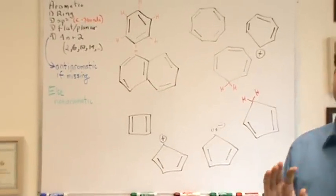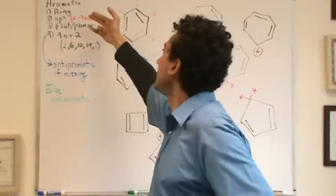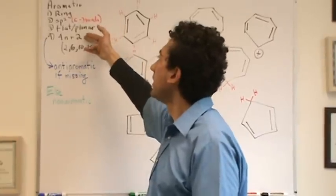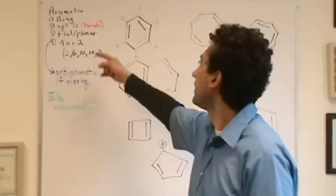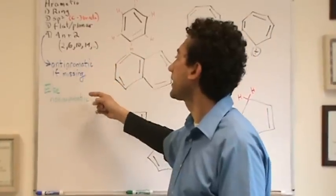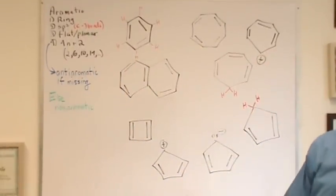So, hopefully that makes sense. Those three. Aromatic, if it follows these four conditions: it's a ring, sp2 hybridized, flat or planar, and 4n plus 2 pi system. If number 4 is missing, it's anti-aromatic. Otherwise, if there's more than that missing, it's totally the non-aromatic category.